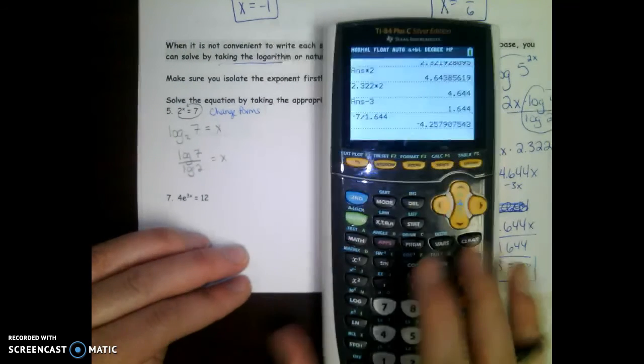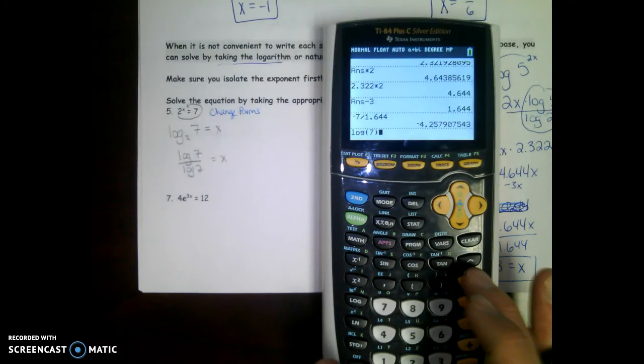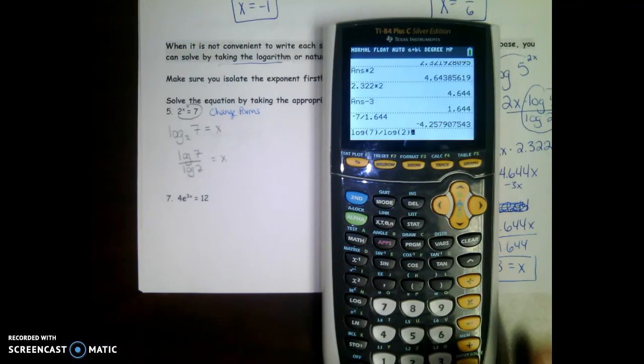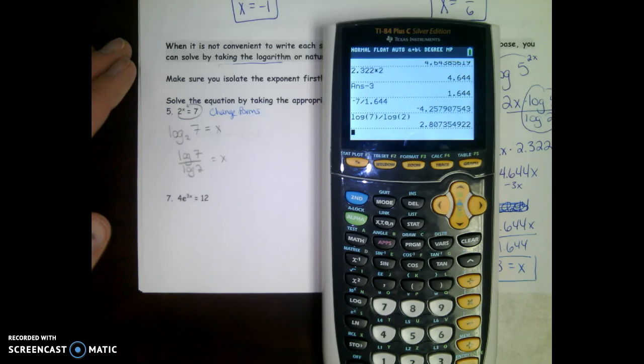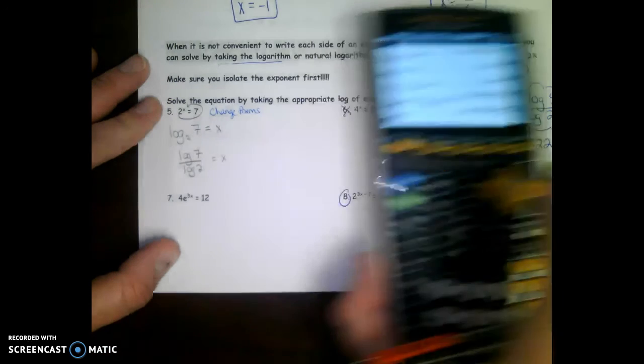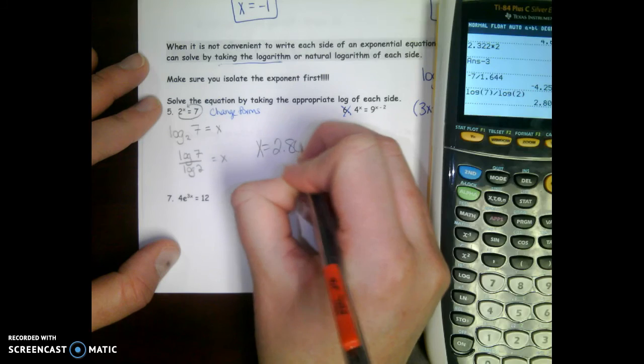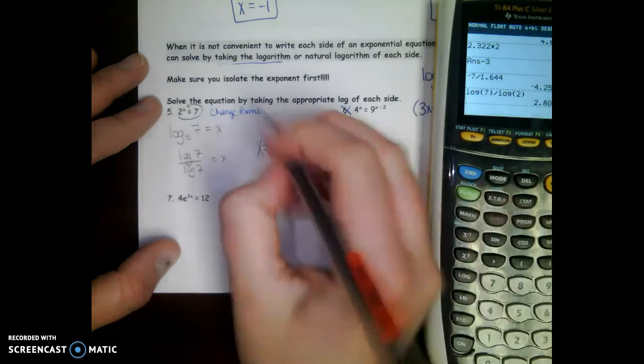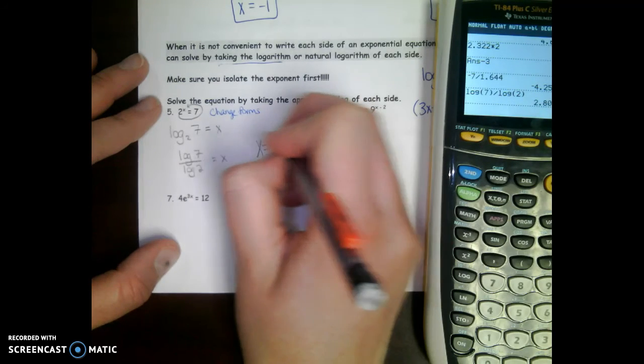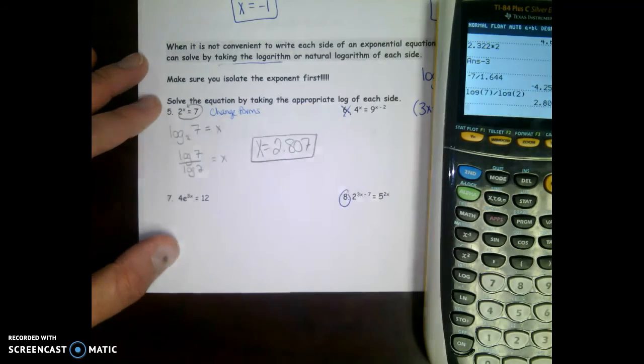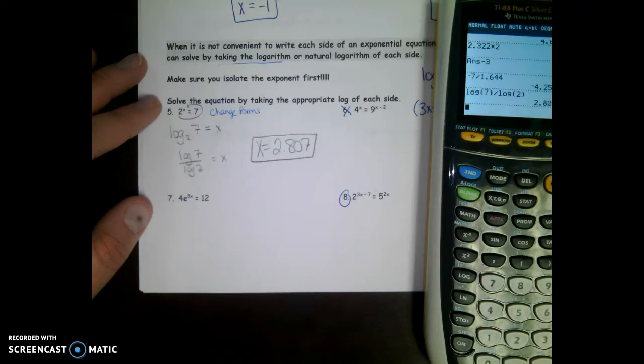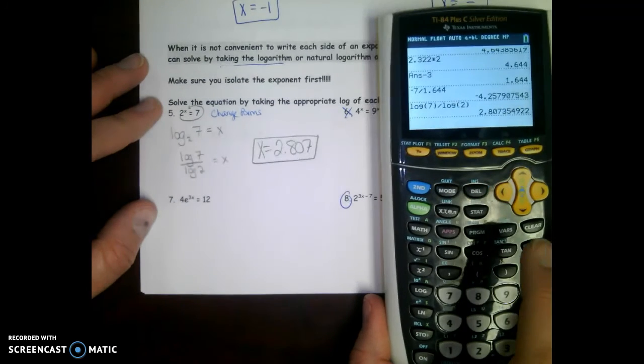So in the calculator, log 7 divided by log 2. x is going to equal 2.807.